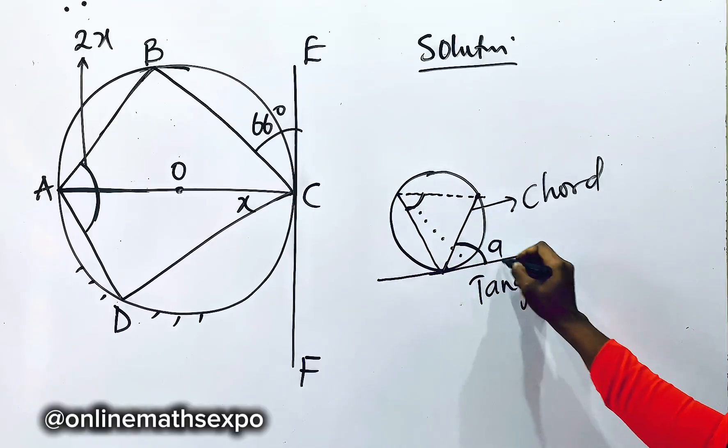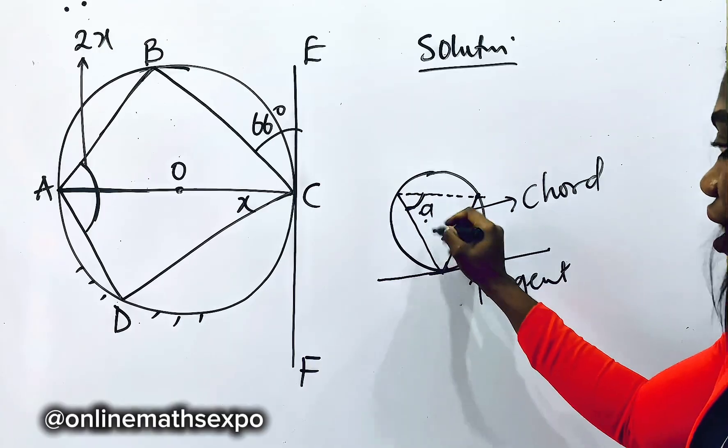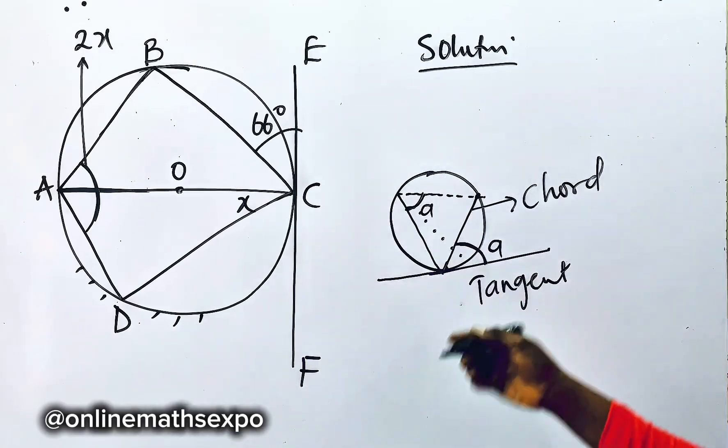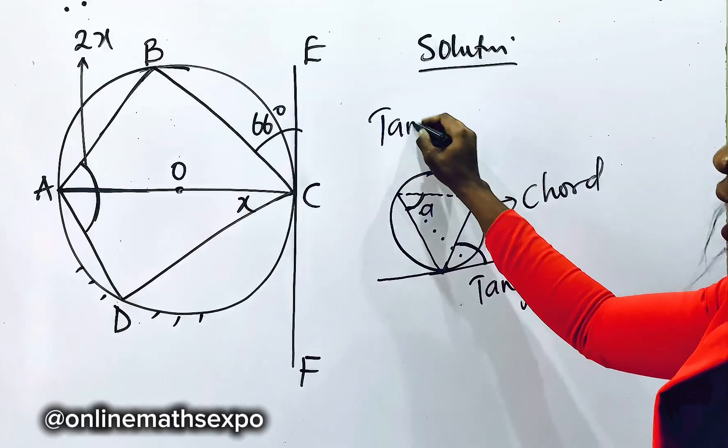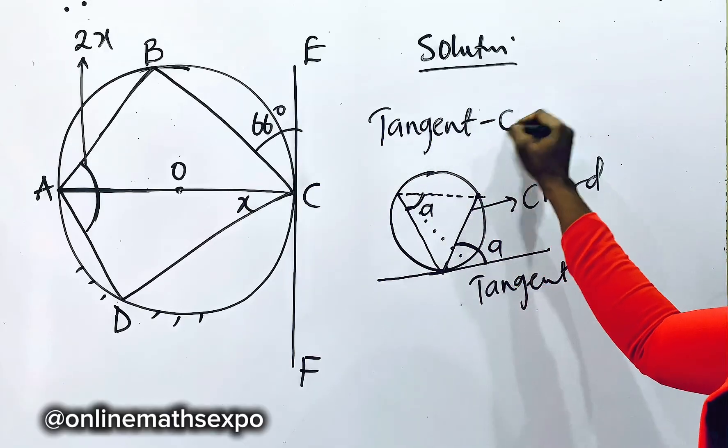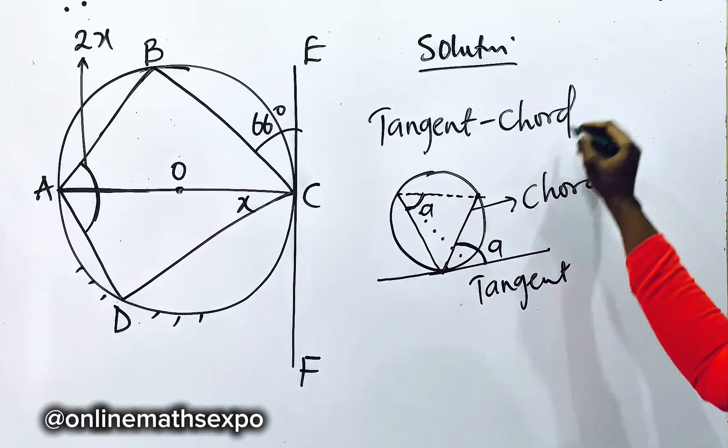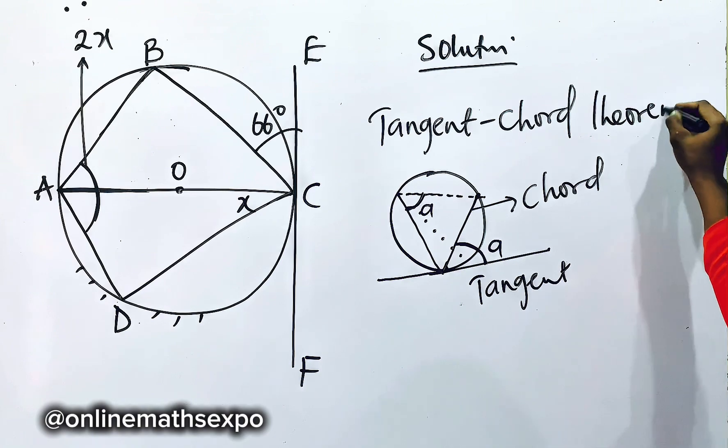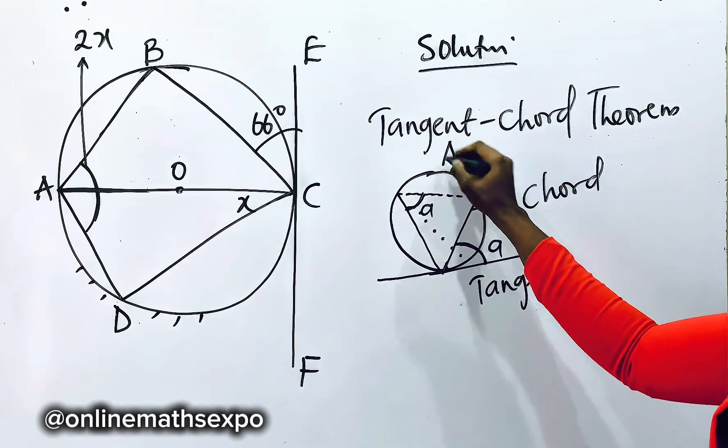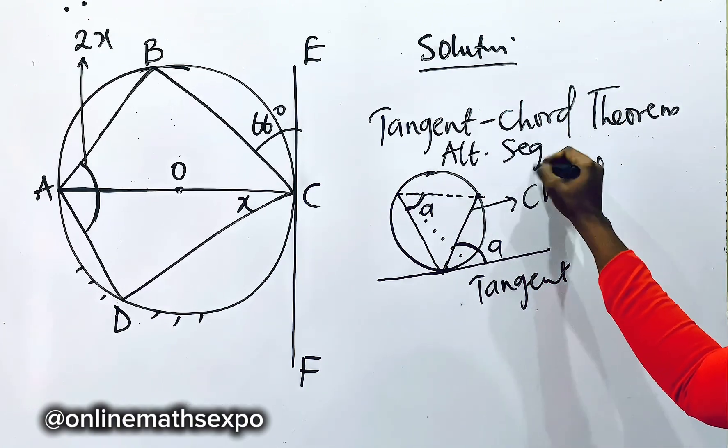So if this angle here is a, automatically this becomes a. And what is your reason? We call it the tangent and the chord theorem, or which you can also call the alternate segment theorem.